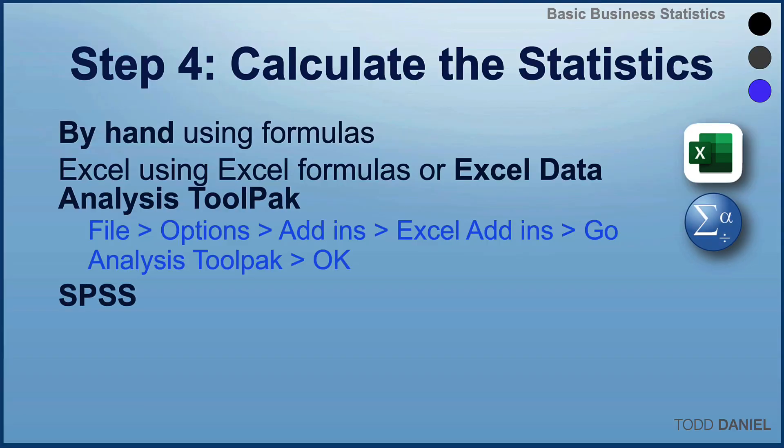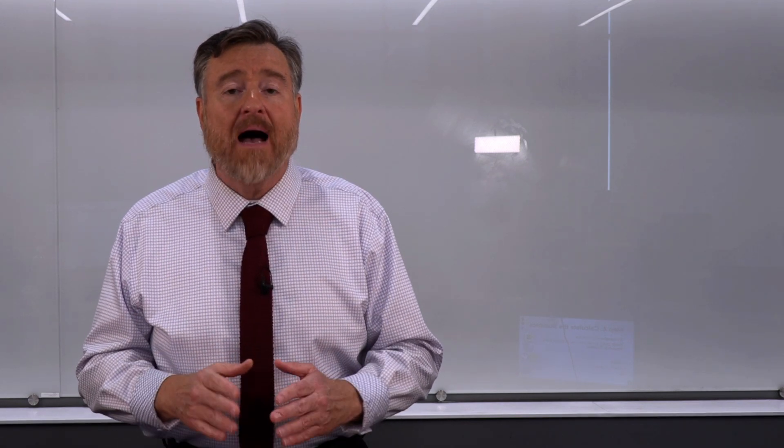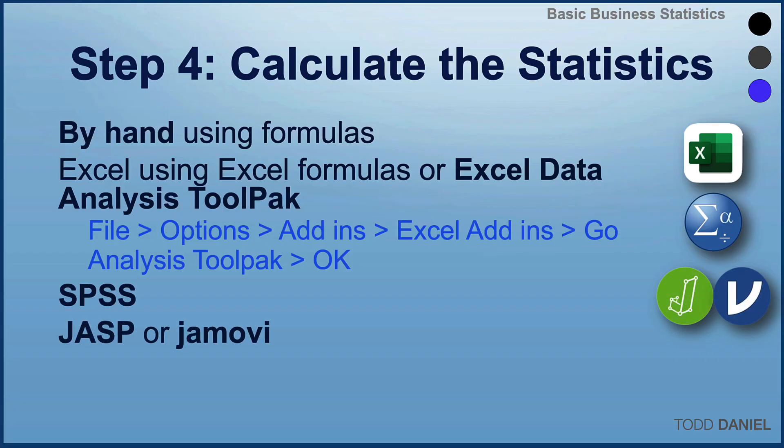One that you might encounter is called SPSS. This is a very powerful statistical program that's used broadly in the social sciences. In my basic business statistics course, I'm also teaching you about JASP. JASP is another very powerful statistical program. It's also open source, meaning that you can download it for free.